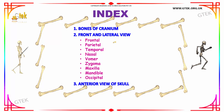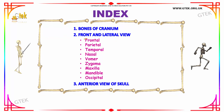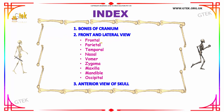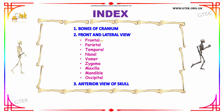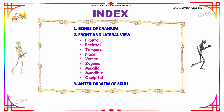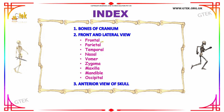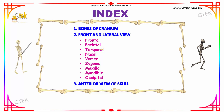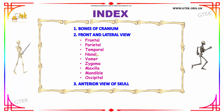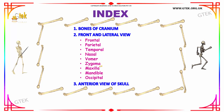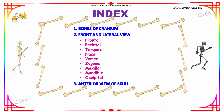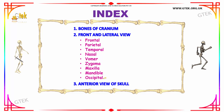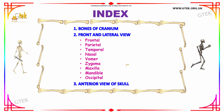Next we are going to see the front and the lateral view of the bones of the skull, which includes your frontal, parietal, temporal, nasal, vomer, zygoma, maxilla, mandible, and occipital bones. Followed by this, we will be seeing the anterior view of the human skull.